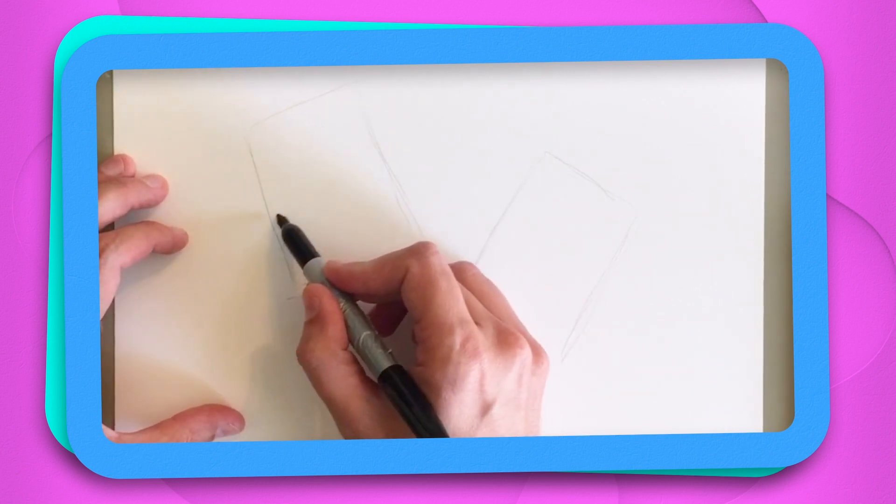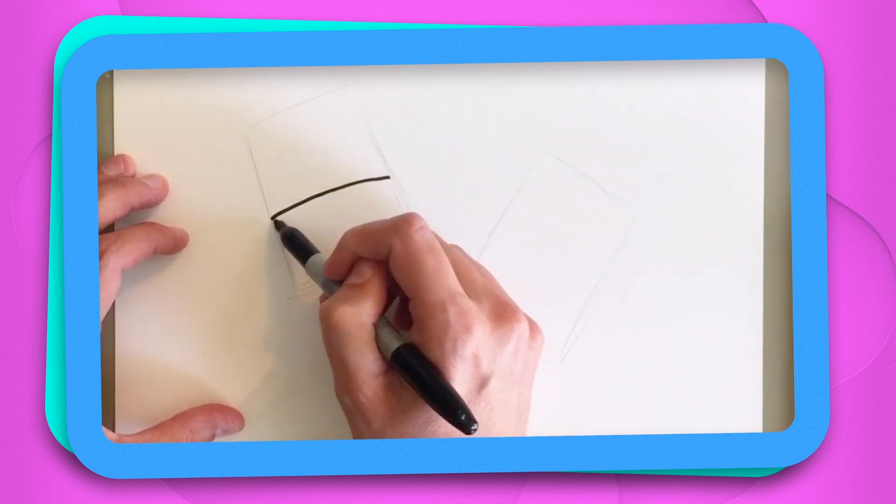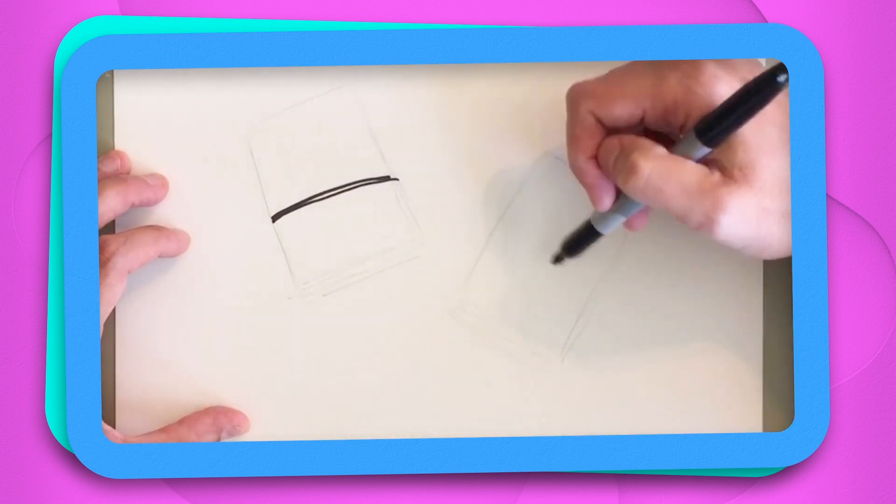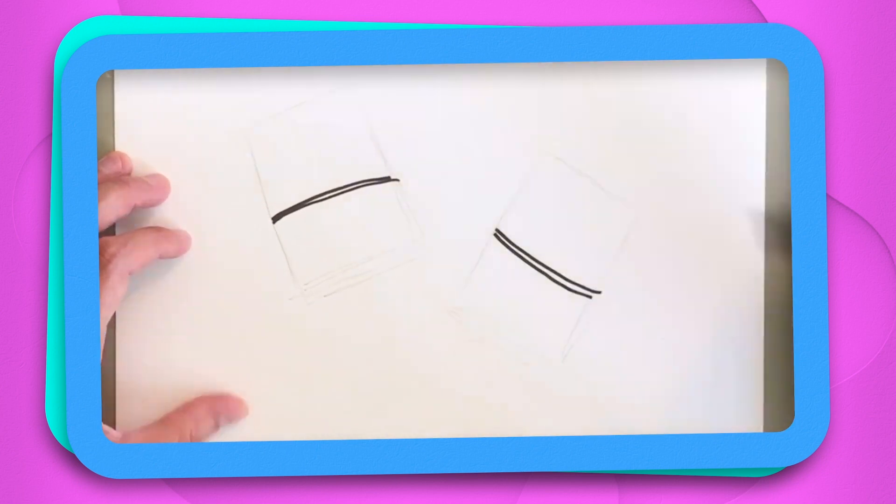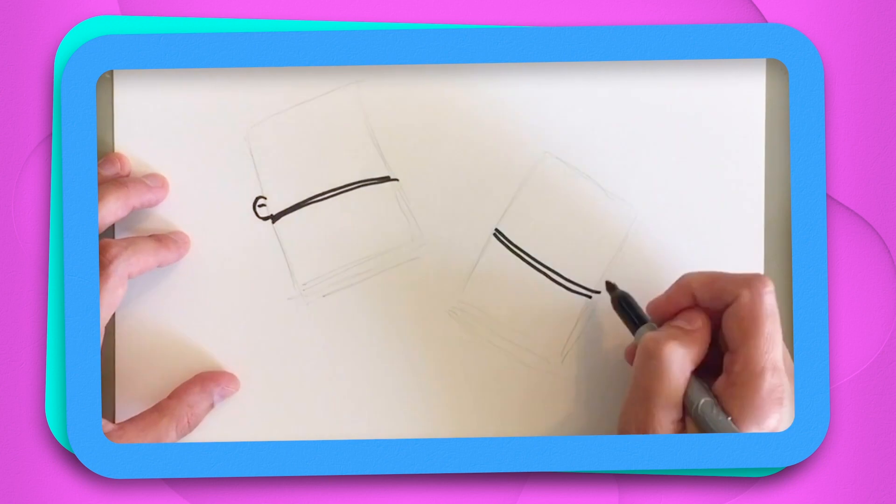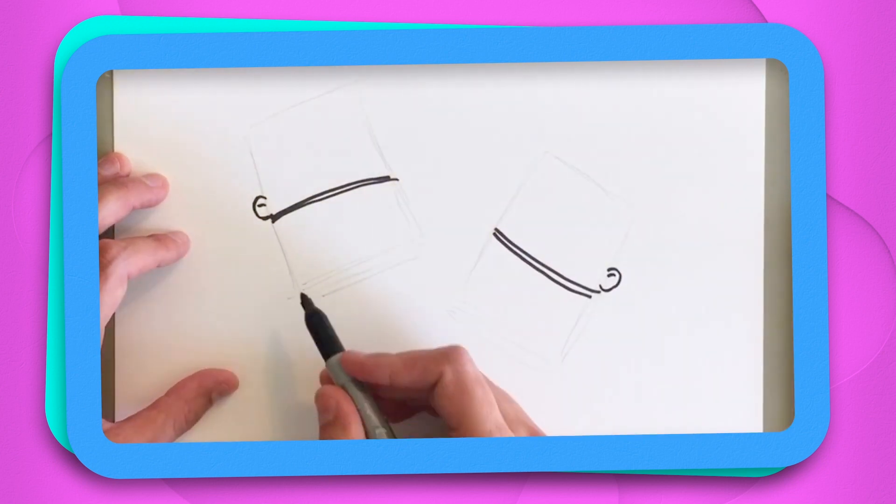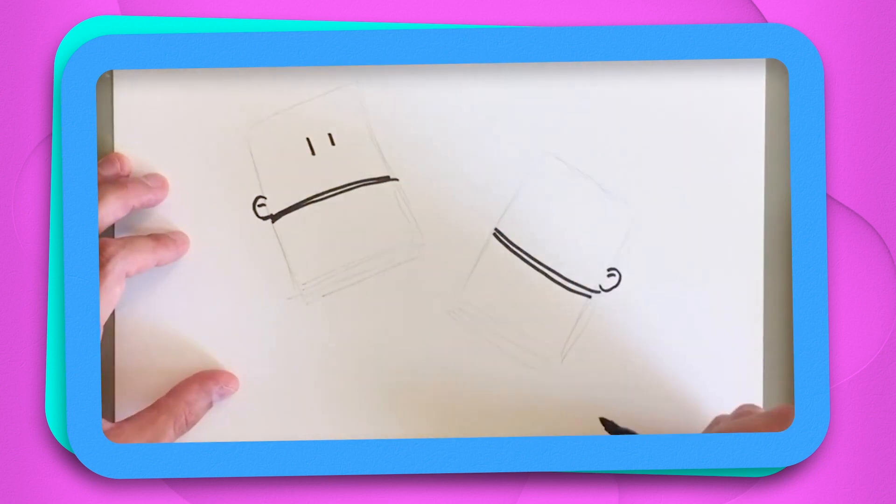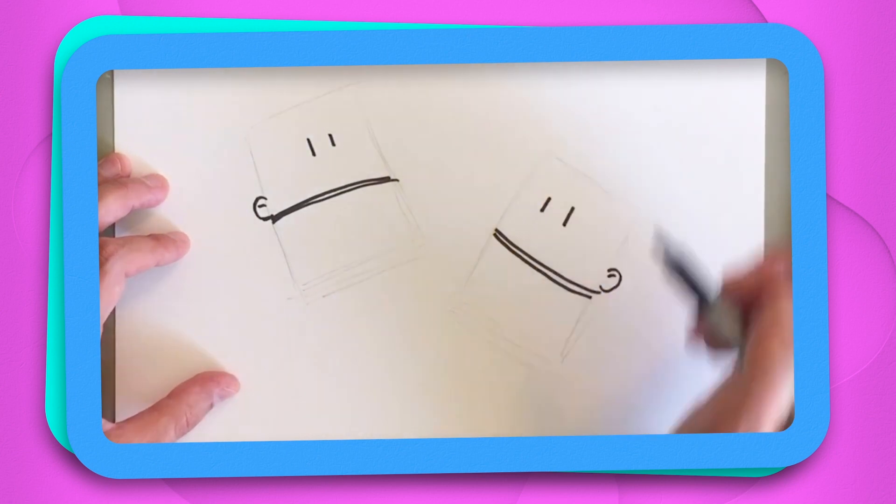The first thing after we do that is we're going to divide these box shapes with a little neckline. Then we're going to give both of them a little ear over here. And then their eyes kind of land somewhere around the middle of their face.